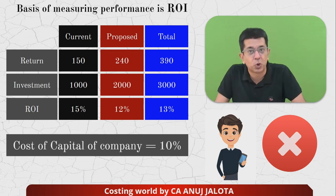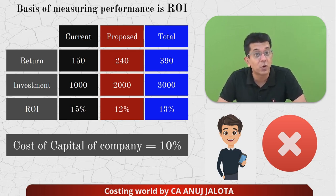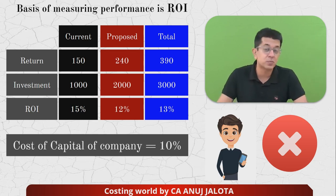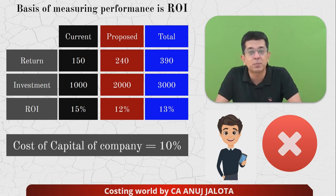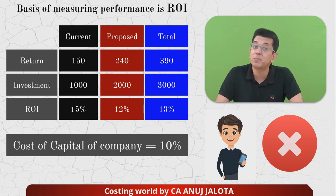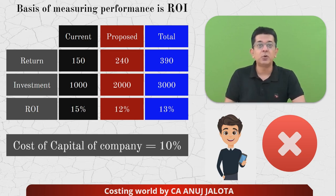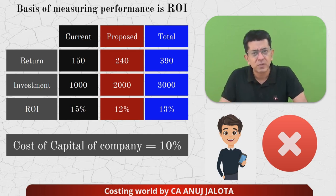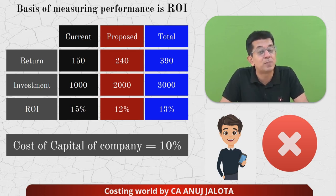What Mr. A did was good for him — his division's ROI was falling from 15% to 13% if he accepted the proposal. But from the company's angle, this new proposal giving 12% ROI is still very profitable, because the cost of capital of the company is only 10%. From a CA Inter FM perspective, the IRR on this project is 12% whereas the cost of funds is only 10%. So from the company's angle, this proposal is good, but from the divisional angle it is bad and hence gets rejected.